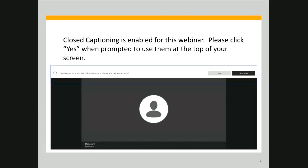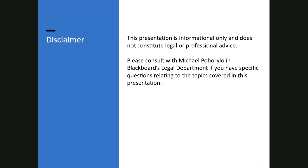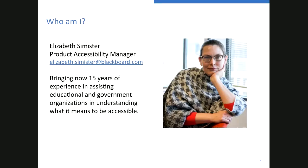My name is Elizabeth Simister. I am the Product Accessibility Manager with Blackboard. I've been doing this since 2004 when I started at Cornell University as a research assistant. They said, you're an IT person, you get this technology stuff — make all of our economics PDFs accessible. So we're talking graphs, we're talking math, and we're talking 2004.